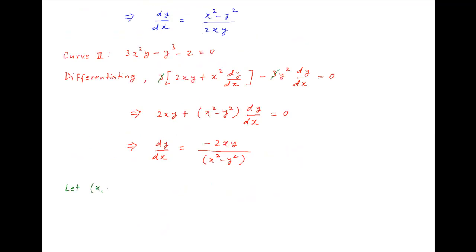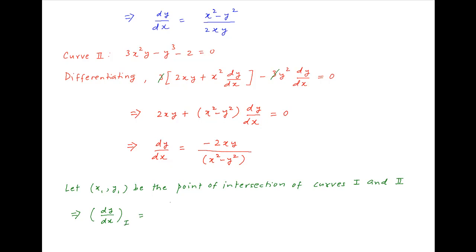Now let x1 and y1 be the coordinates of the point of intersection of the two curves. Therefore the slope of the tangent, or dy/dx, at the point of intersection for the first curve is equal to x1 squared minus y1 squared divided by 2x1y1. And similarly the slope of the tangent at (x1, y1) for the second curve is equal to minus 2x1y1 divided by x1 squared minus y1 squared.